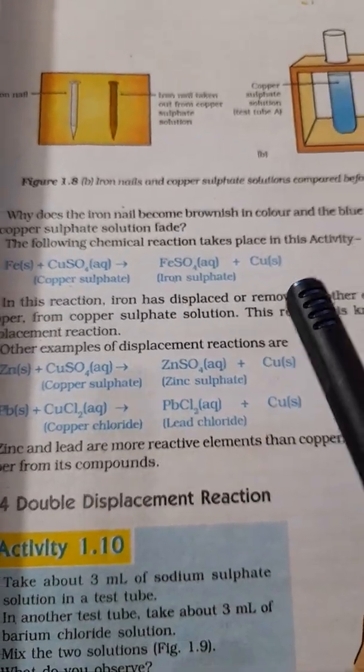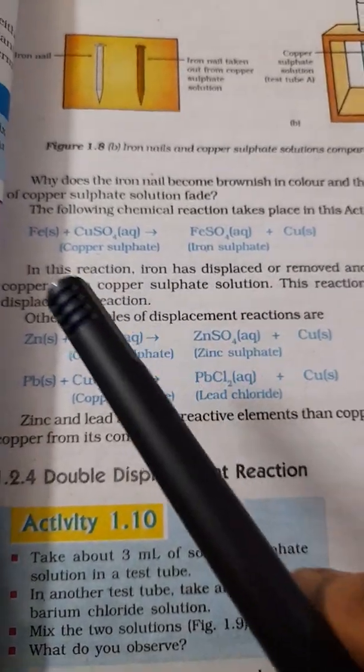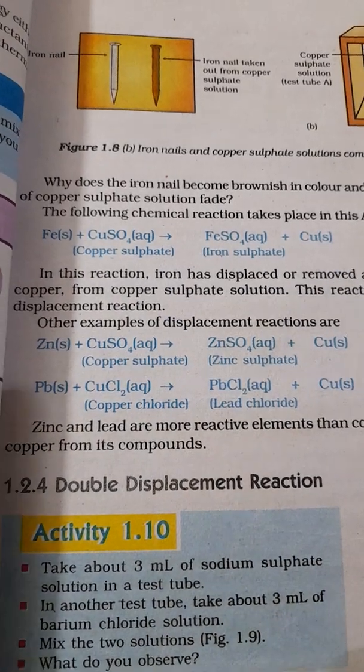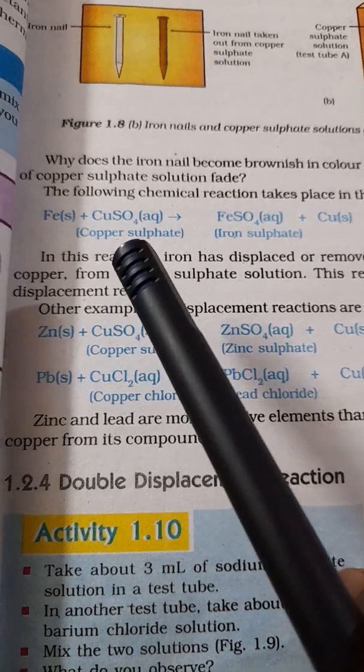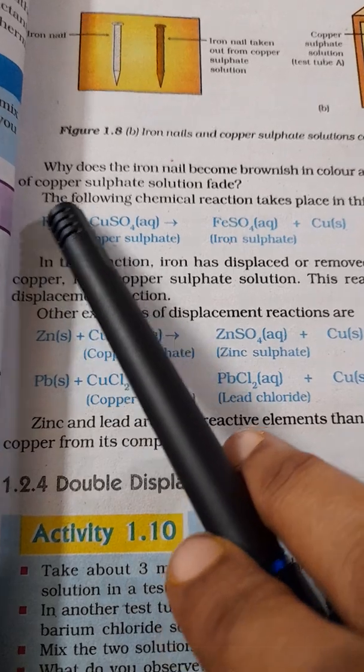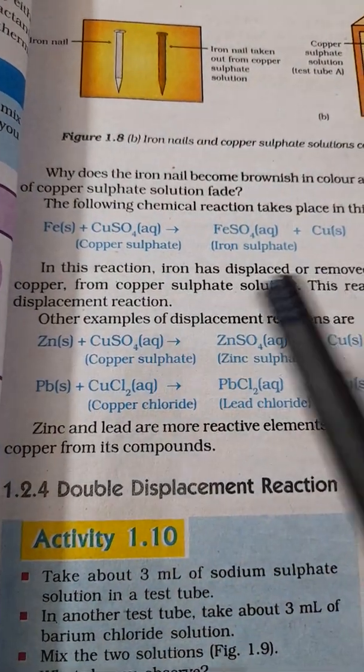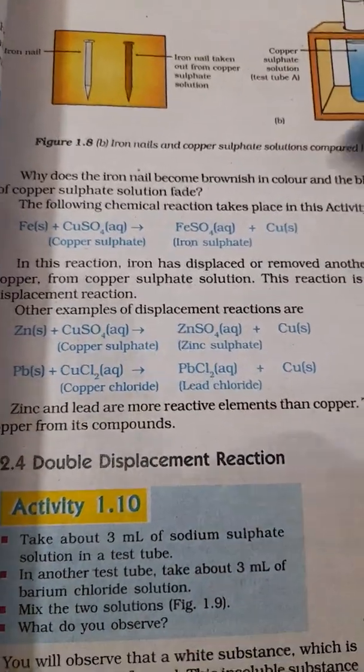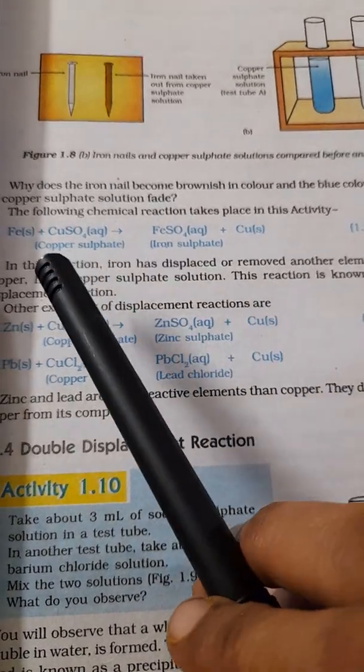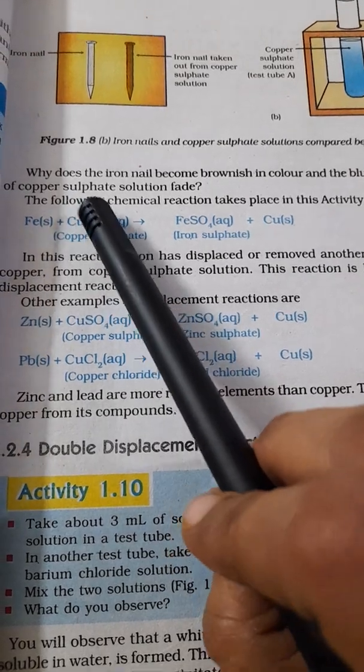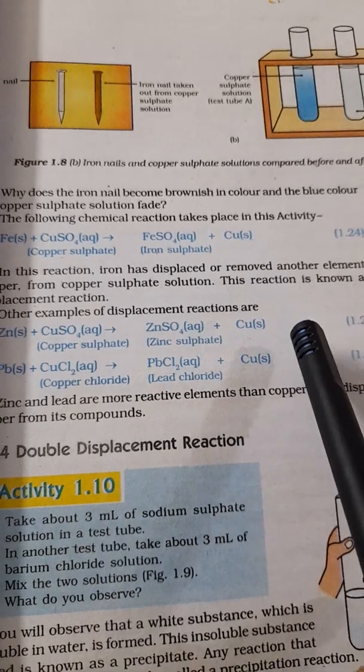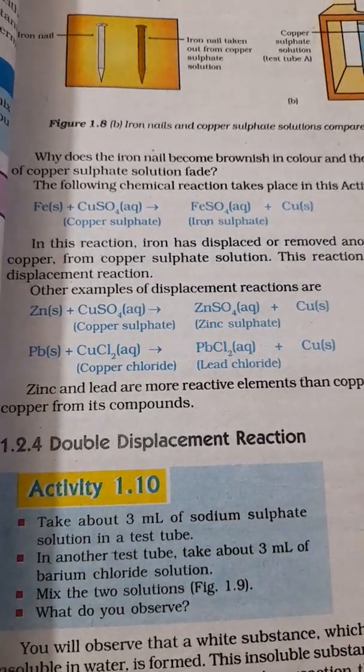The chemical reaction taking place in this activity is iron plus copper sulphate giving iron sulphate and copper. What you can watch here is that this copper is going out of copper sulphate and iron is in turn combining with sulphate, forming iron sulphate. You can see that iron has displaced or removed another element.